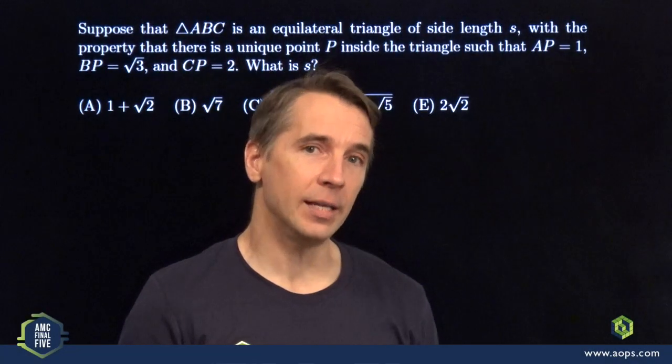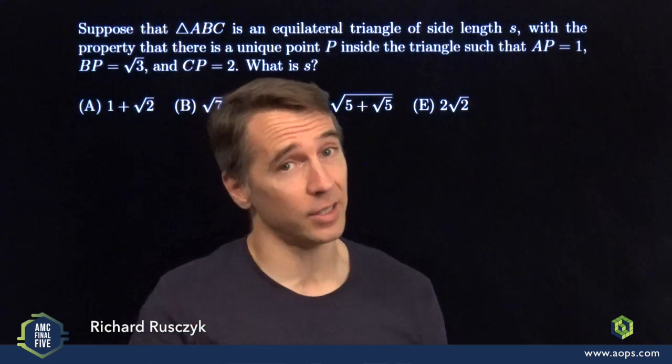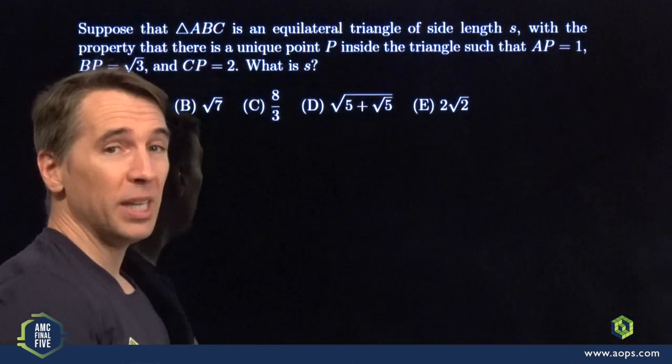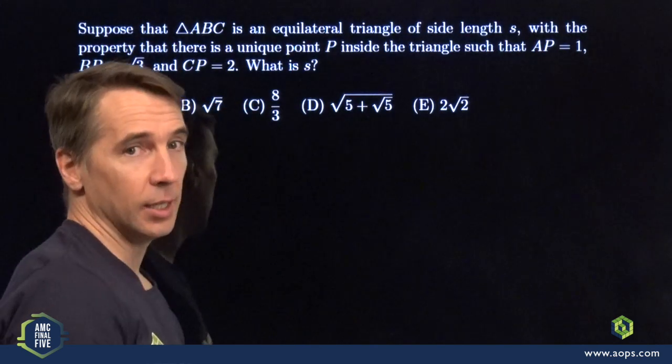We have an equilateral triangle ABC and a point inside that triangle. It's one away from A, root three away from B, and two away from C. We have to find the side length of the triangle.